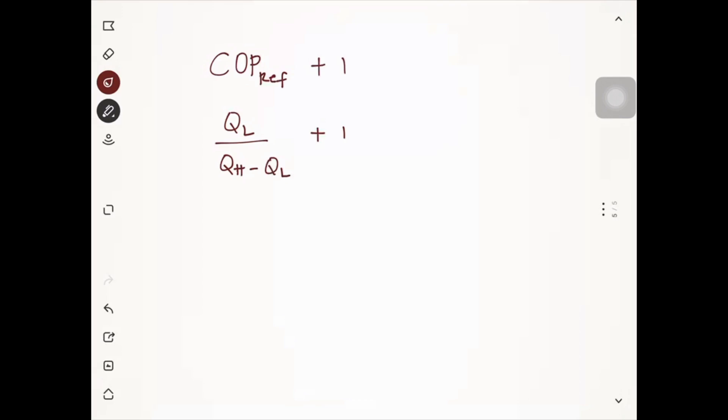By manipulation, you can simplify this one. This is QL over QH minus QL plus one, or one will be equivalent to QH minus QL over QH minus QL, that is equivalent to one. So take the common denominator, which is the QH minus QL.